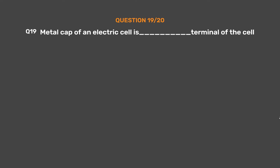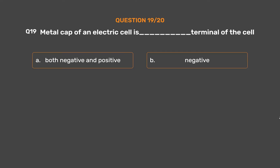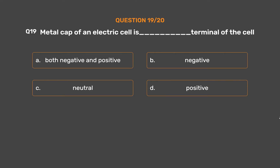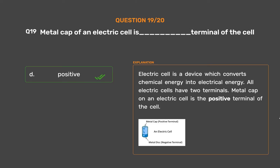Question number 19. Metal cap of an electric cell is the blank terminal of the cell. Option A: Both negative and positive. Option B: Negative. Option C: Neutral. Option D: Positive. The correct answer is Option D, Positive. Electric cell is a device which converts chemical energy into electrical energy. All electric cells have two terminals. The metal cap on an electric cell is the positive terminal of the cell.